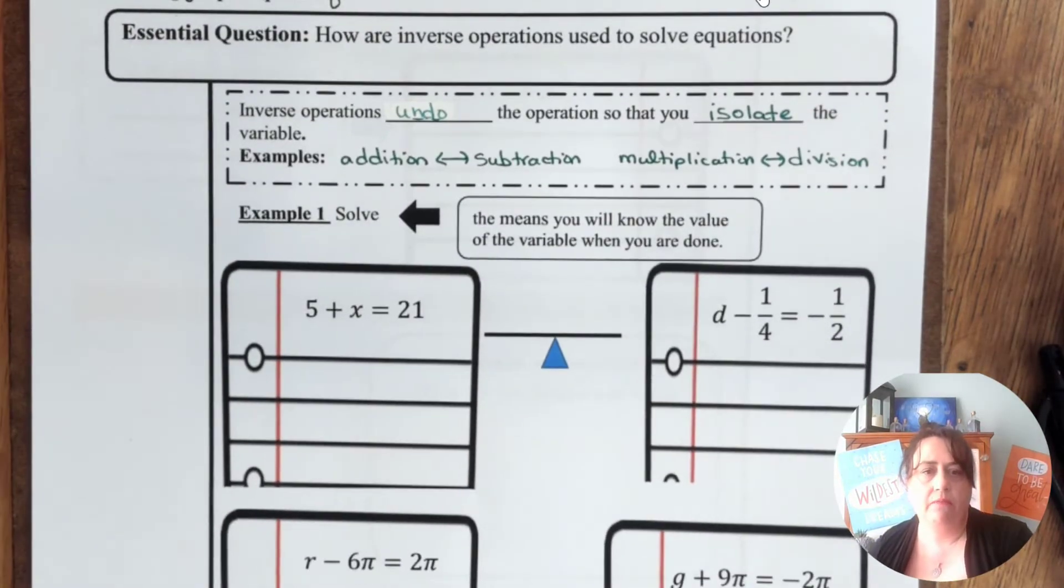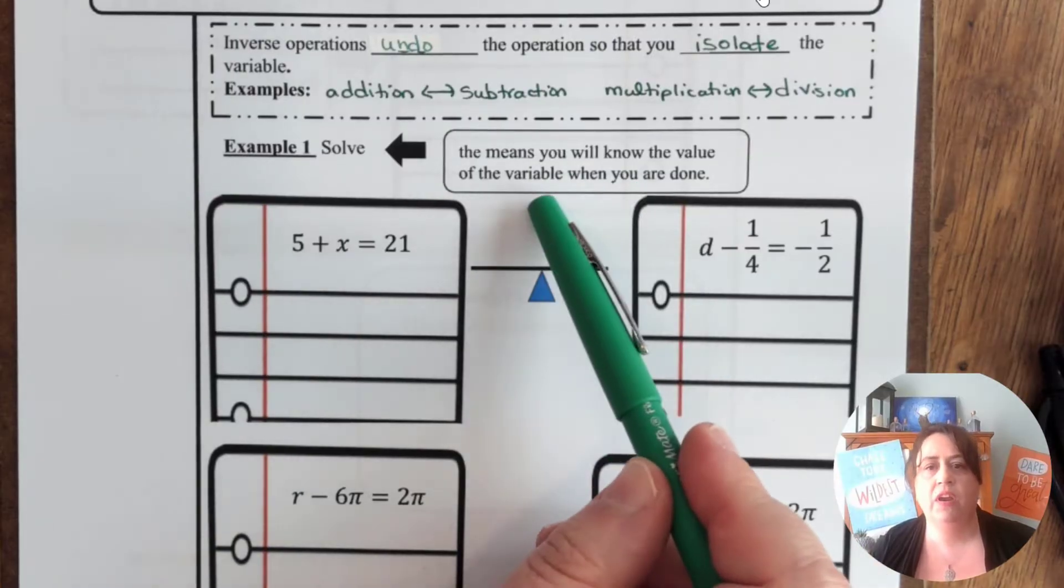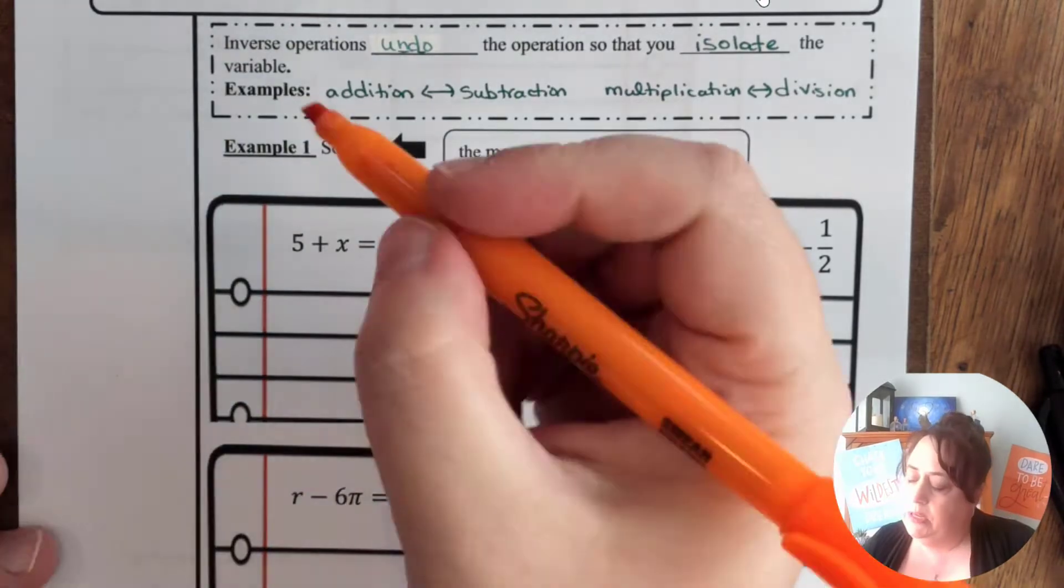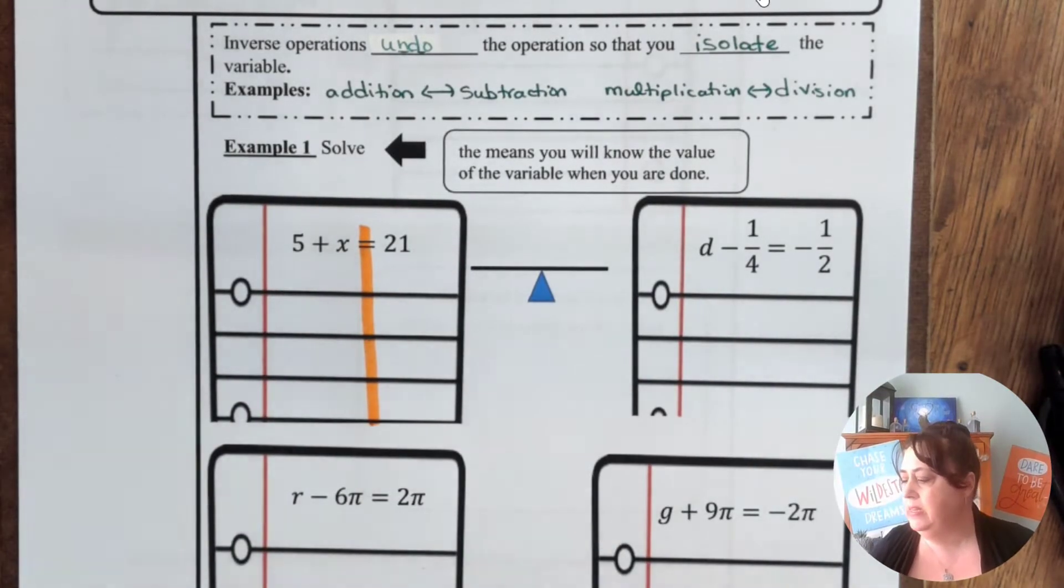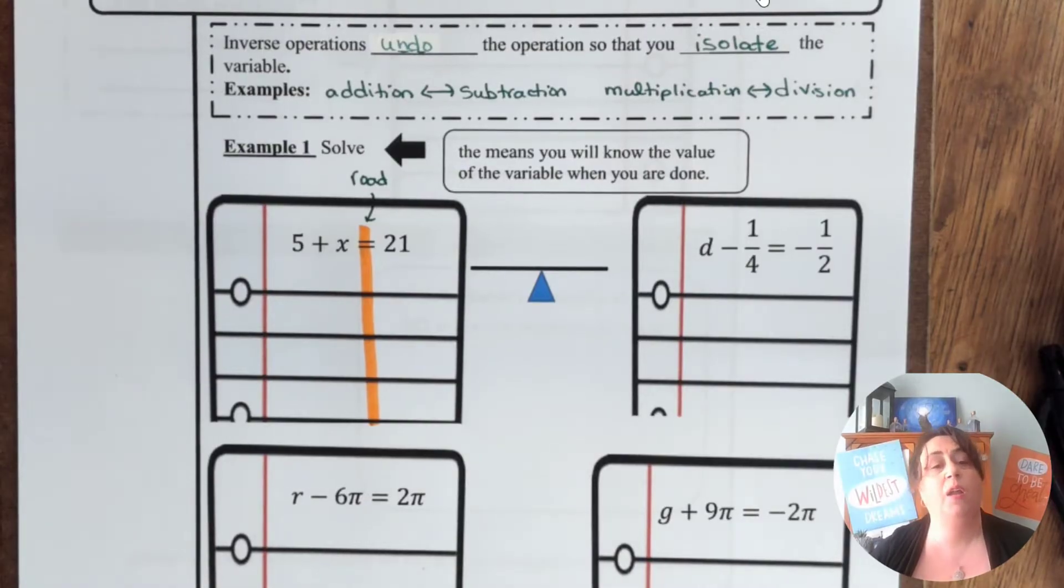We're going to look at solving an example. So when we say solve, this means that you will know the value of the variable when you are done. In class, we will be doing something called focus note taking. So a technique that we use in solving equations is something that I call putting in a road. When you put in a road you learn to look both ways. What we do is we put in a line at the equal sign and we call that the road. And what it does is it just helps us to remember we have to do the same thing on both sides.